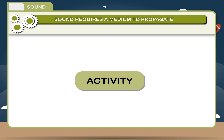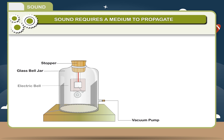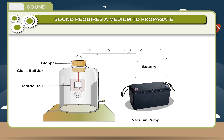Activity: Take a jar fitted with a vacuum pump and sealed by a stopper. Put an electric bell inside. Allow electric current to flow to the bell in the jar with the help of a battery. You will hear the bell ringing.